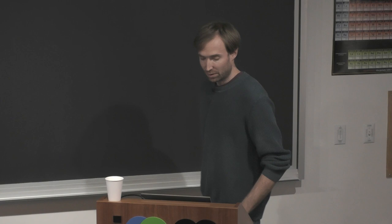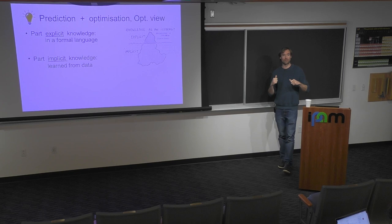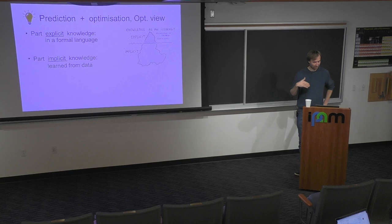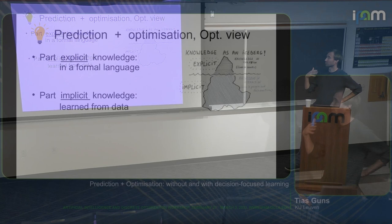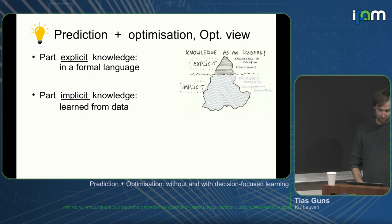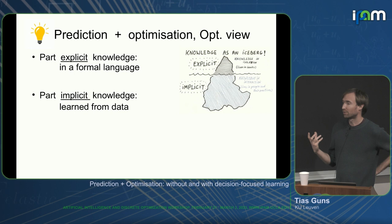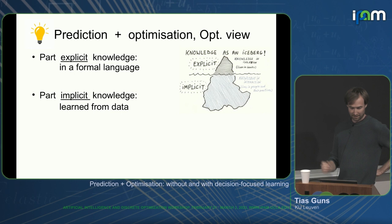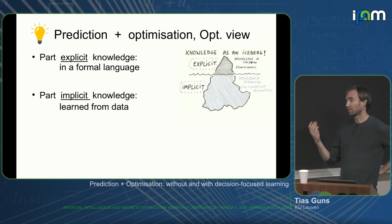From a machine learning point of view, the typical argument is that you want to do learning but it's hard — or impossible — to enforce hard constraints, so you want to add some reasoning on top. But from the combinatorial optimization point of view, in OR in the past people have almost always assumed you can formulate your problem in a formal language. But more and more, in the big data age, it's not always possible to explicitly model everything in terms of constraints, and you might want to learn some implicit knowledge from data.